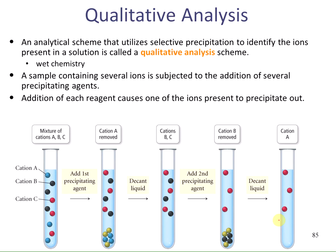Part of your lab experience will be to do what we call the QUAL scheme. The QUAL scheme is a qualitative analysis of ions where you'll be given an unknown solution of several different ions, and you'll have to do several different reactions to separate those ions and identify each ion that you removed. An analytical scheme that utilizes selective precipitation to identify the ions present in solution is called a qualitative analysis scheme, and this requires wet chemistry techniques.